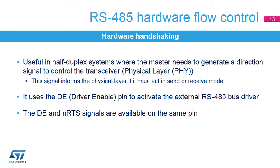For serial half-duplex communication protocols like RS-485, the master needs to generate a direction signal to control the transceiver, also called physical layer. This signal informs the physical layer if it must act in send or receive mode. In RS-485 mode, a control line called Driver Enable is used to activate the external transceiver. The DE control line shares the pin with NRTS.